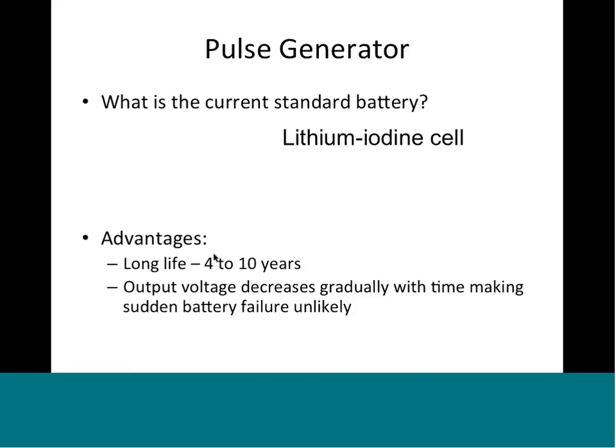When you're running out of battery, unlike a battery in your clock where it runs out and stops working, you can't afford that with a pacemaker. Therefore the output voltage will gradually decrease over time - you won't get a sudden failure making it an emergency. As long as you're checking the pacemaker at certain intervals, you'll see the output is decreasing, the battery life is going down, and it gives you time to plan a battery replacement.